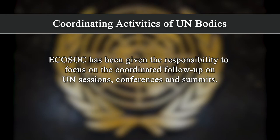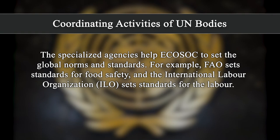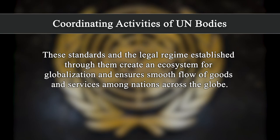ECOSOC has been given the responsibility to focus on the coordinated follow-up on UN sessions, conferences, and summits. The ECOSOC system provides a platform for international cooperation and has ensured smooth functioning of the international system through standard setting and technical advice. The specialized agencies help ECOSOC set global norms and standards. For example, the Food and Agriculture Organization sets standards for food safety, and the International Labour Organization sets standards for labor. These standards create an ecosystem for globalization and ensure smooth flow of goods and services amongst nations.